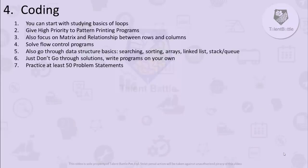For the coding part, start with the basics of loops. Give high priority to pattern-printing programs, as they have been asked many times — you should be able to write any pattern-printing program. Also focus on matrix and the relationship between rows and columns, flow control programs, and data structure basics like searching, sorting, arrays, linked lists, stacks, and queues. Most importantly, don't just read solutions from websites — write the programs on your own, then check where the mistake is. Practice at least 50 problem statements.